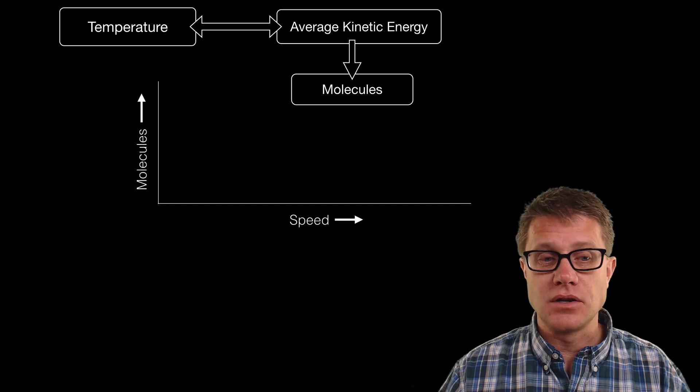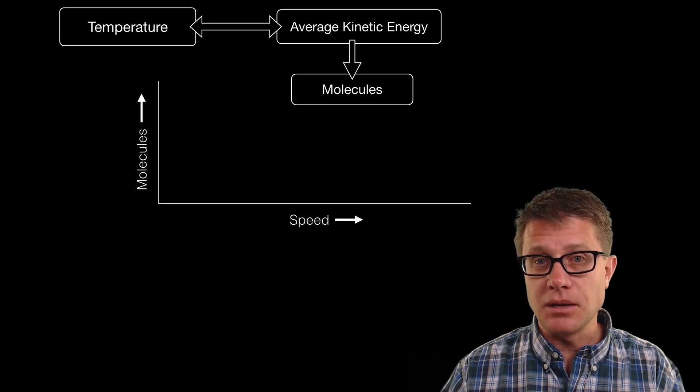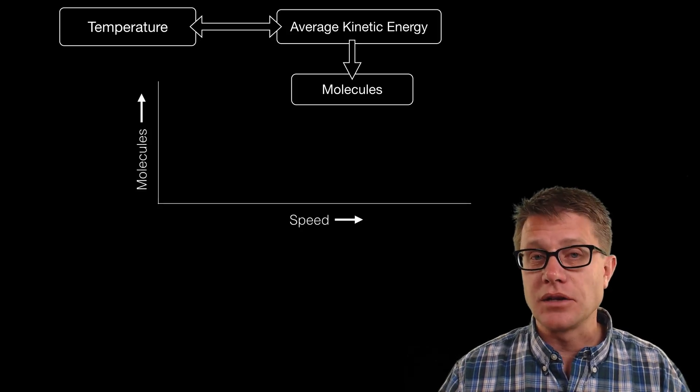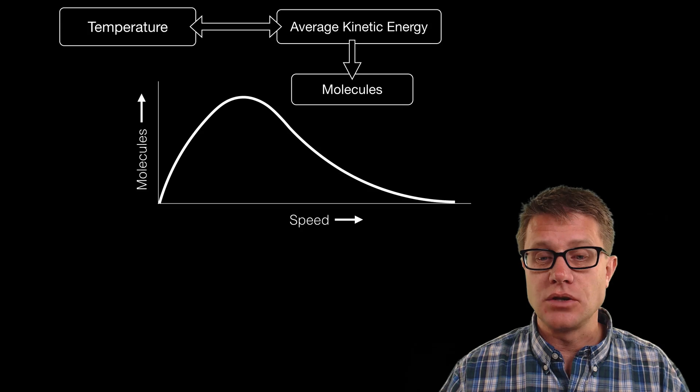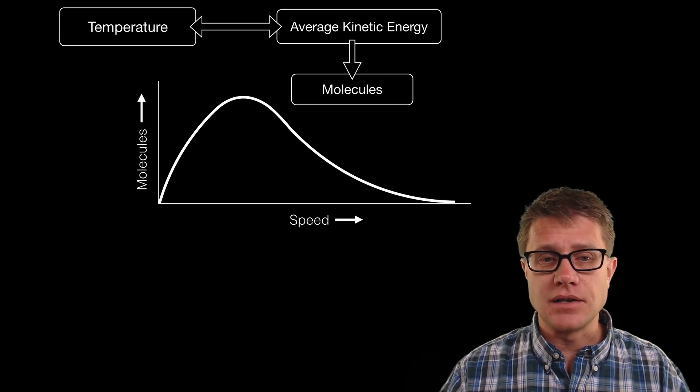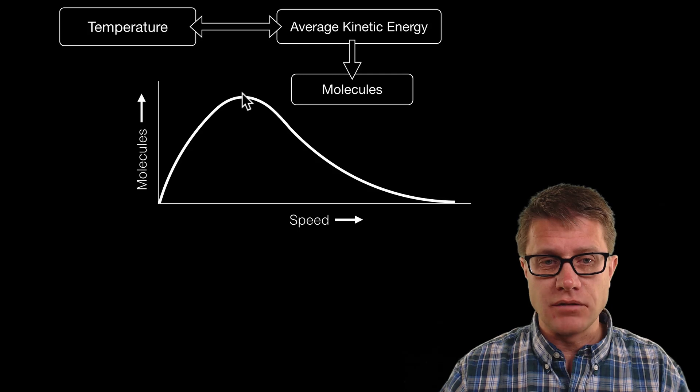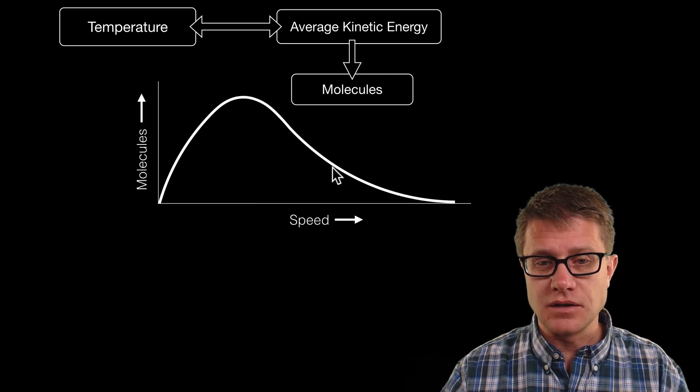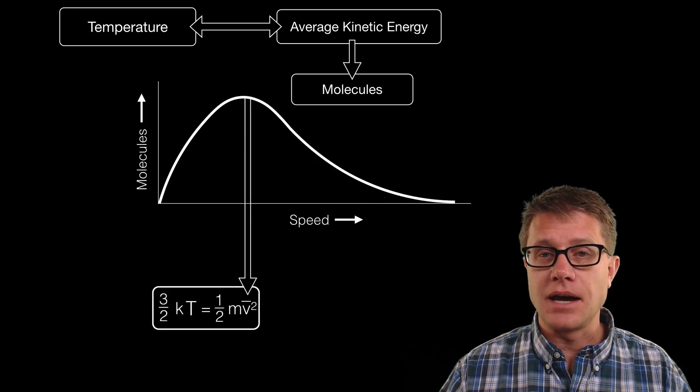Lots of times you will represent that using a distribution where we put the speed on the bottom and then the number of molecules on the left. So we try to say where is that average velocity. The tendency is to want to put the average right here, but it is actually going to be, since it goes to the right, it is going to be a little bit off center like that.